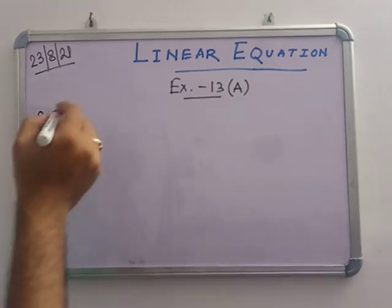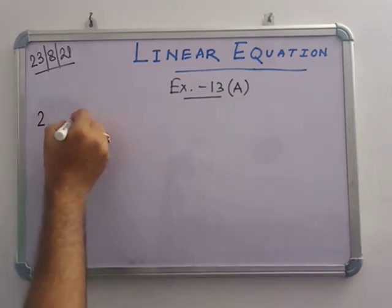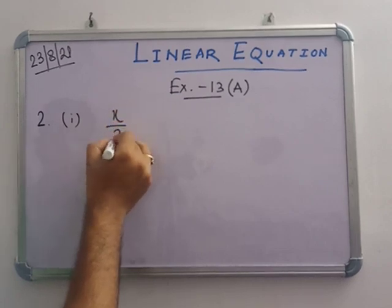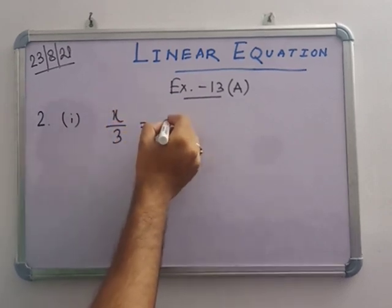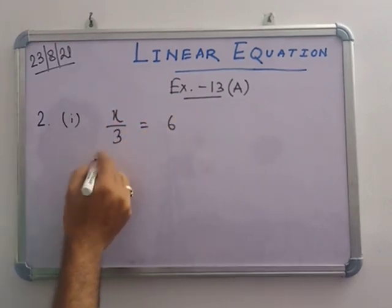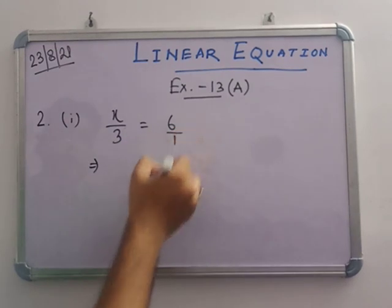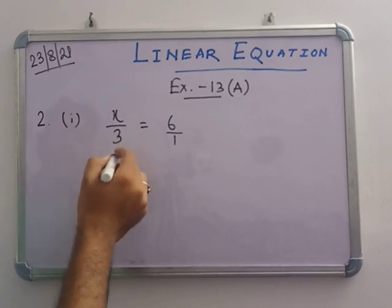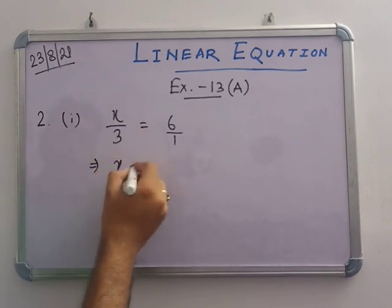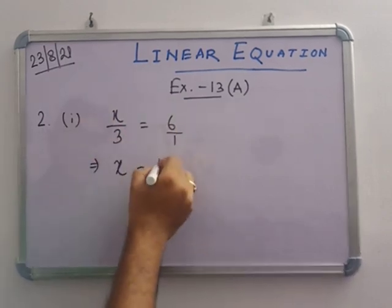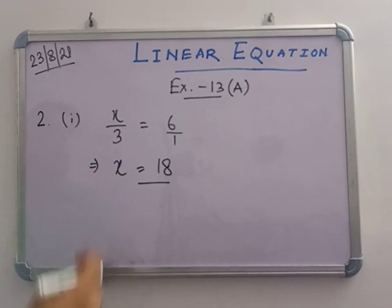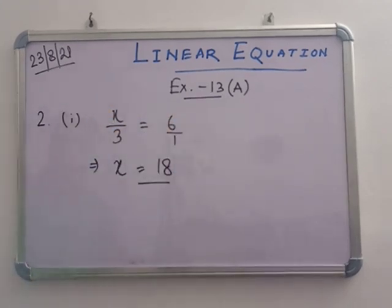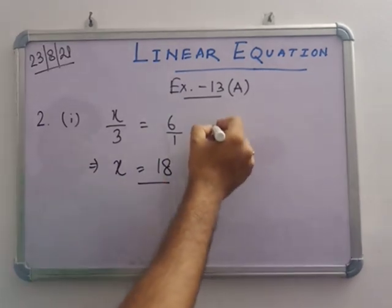In number 2, problem 1: x by 3 equals to 6. Using cross multiplication — x into 1 equals x, and 6 into 3 equals 18 — so x equals to 18. Verification: 18 by 3 equals 6. This is proved.